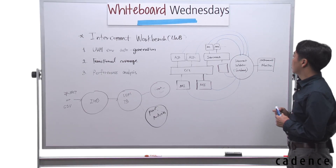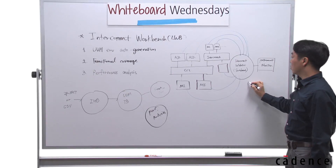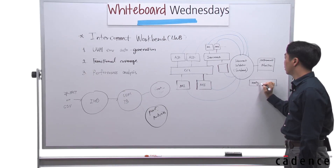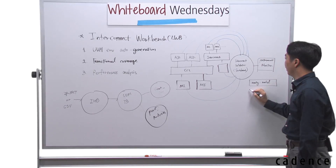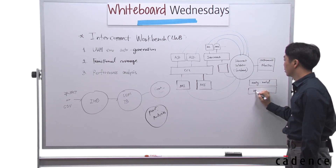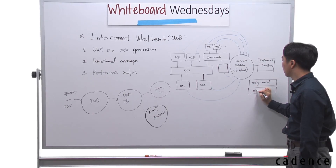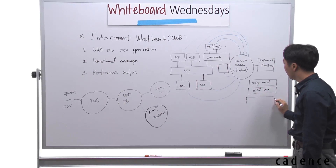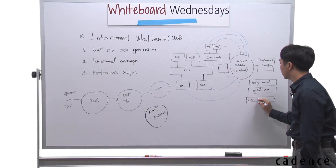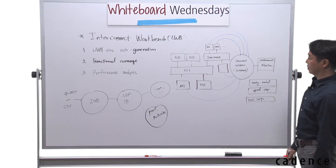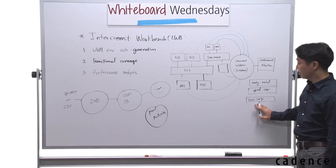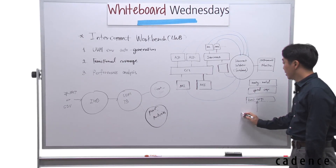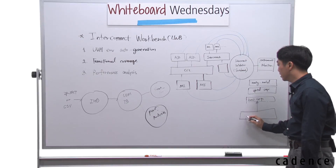The IWB includes the routing model, virtual sequence, and basic sequences. Using the basic sequences, the user can easily create their own practical scenarios.